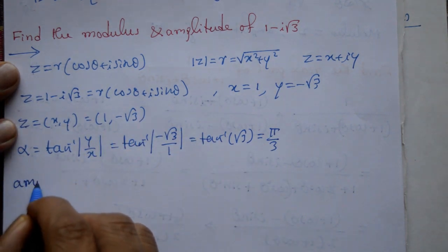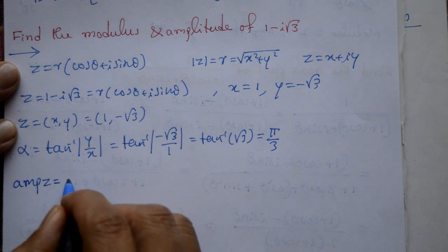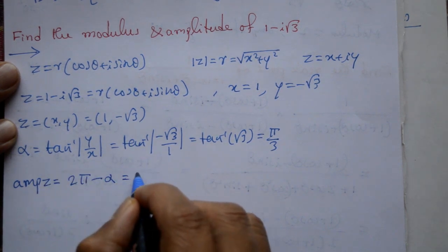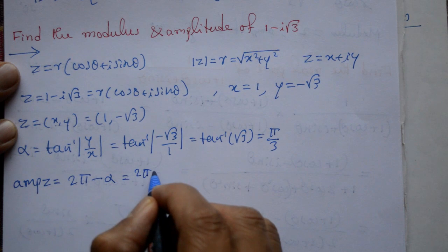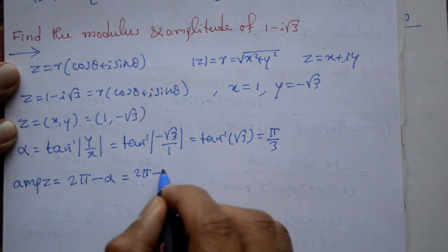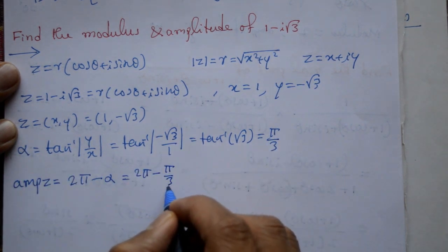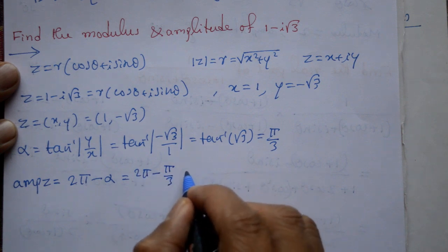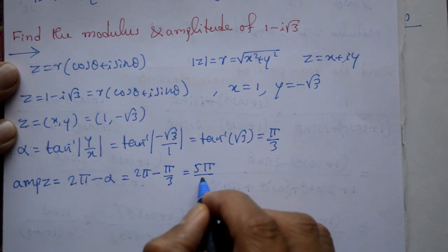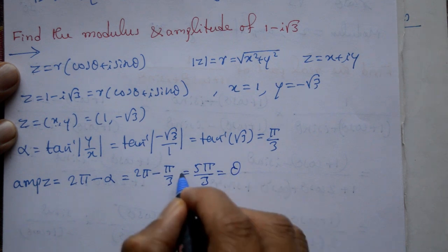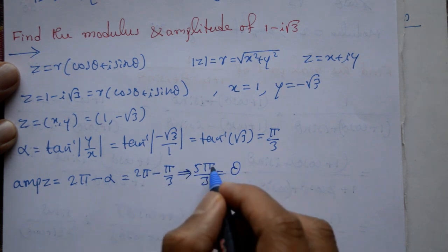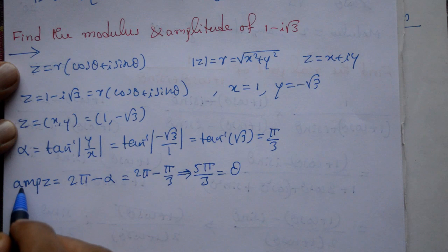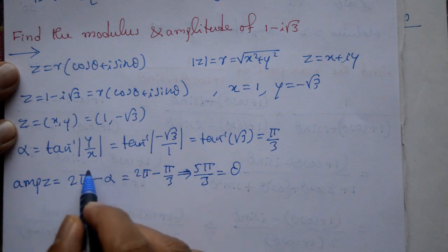Amplitude of z kya hai? Ishtera lena hai, dheko — 2 pi minus alpha. So that is 2 pi minus alpha. Alpha is pi by 3. So 2 pi minus pi by 3: 6 pi minus pi gives 5 pi by 3. Yehi theta hai. Amplitude of z is equal to 2 pi minus alpha.